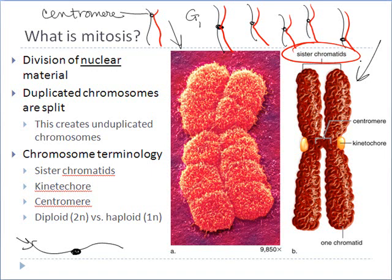The purpose of mitosis is to carefully orchestrate the dividing up of the sister chromatids in all these duplicated chromosomes, so that each daughter cell gets exactly one complete copy of all the chromosomal material. The way to know how many chromosomes are present in any cell is to count the number of centromeres.